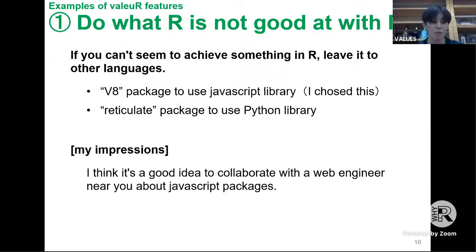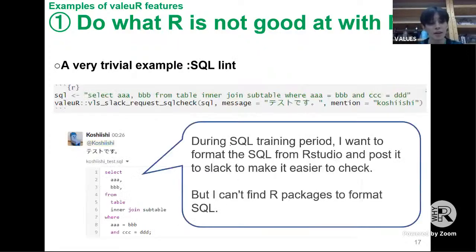We also worked on improving operational efficiency. When R is not good at something, consider leaving it to another language. You can use Python with the reticulate package, or use JavaScript libraries with the htmlwidgets package. Collaborating with engineers — even if they are not data analysts — can provide information about other language packages. Here is an example of combining R with JavaScript to send a post to Slack.